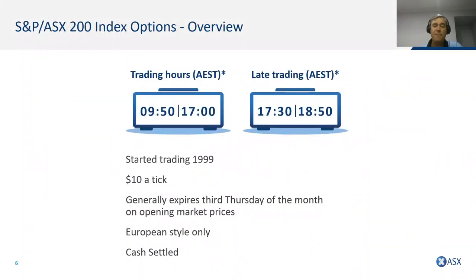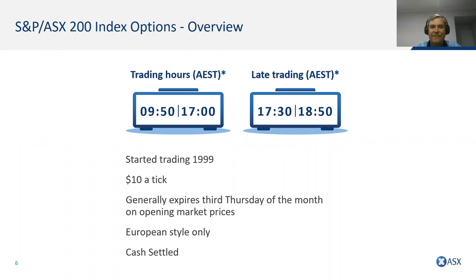Index options open a little earlier — they're based on the SPI futures contract or S&P/ASX 200 futures contract at ASX, opening at 9:45 a.m. for trading, before the actual underlying share market opens. It trades through until 5 p.m. with late trading available. Unlike single stock options which are 100 shares per contract, index options are worth $10 a tick. If the index is at 7,150 points, that contract is worth $71,500. Index options expire on the opening price and are all European style and cash settled.